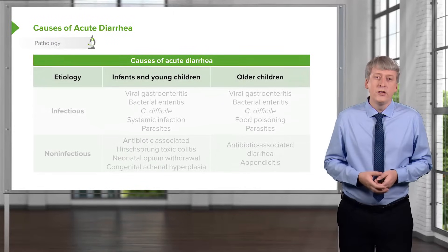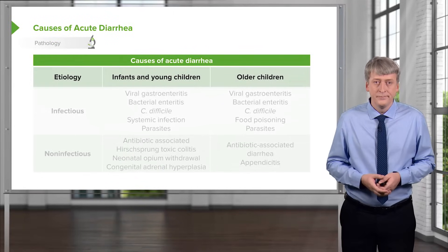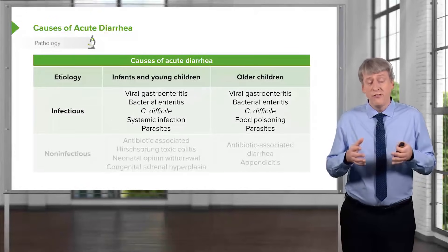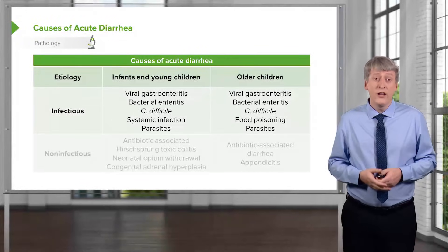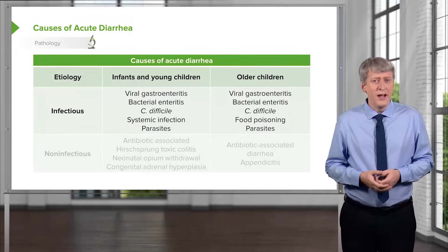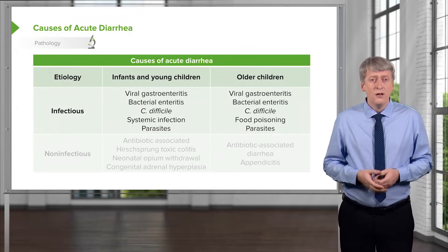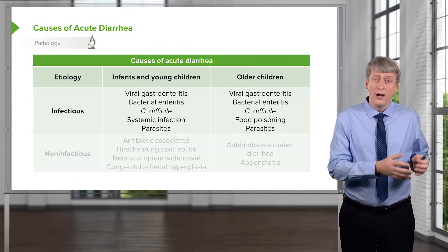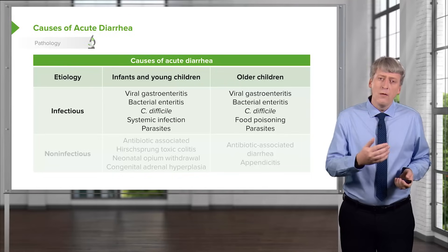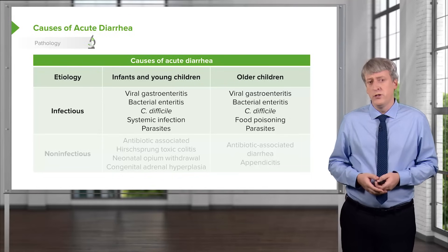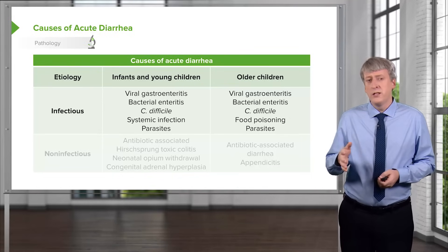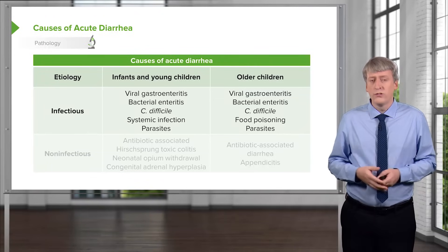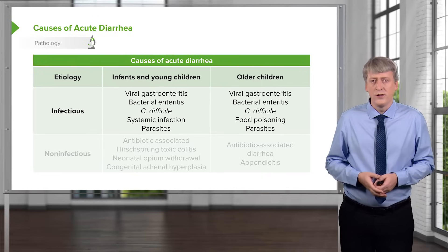Let's drill down into the causes of acute diarrhea. By far and away, the most common cause is infectious, and among infectious causes, by far and away, the most common is viral etiologies. Viral illness used to be more in the spring with rotavirus outbreaks, but that's less common now because of vaccination. It now tends to be a little bit more in the summer and perhaps into the fall, and of course in the winter we see some viral gastroenteritis as well.